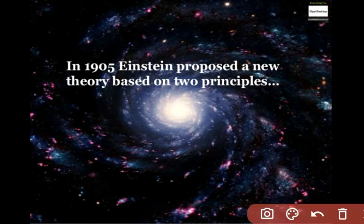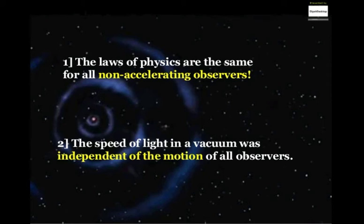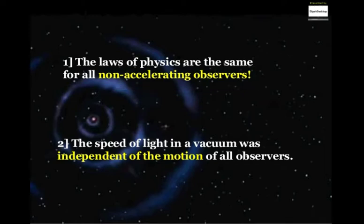In 1905, Einstein proposed a new theory based on two principles. First, the laws of physics are the same for all non-accelerating observers. Second, the speed of light in a vacuum is independent of the motion of all observers. These are the two basic principles known as the postulates of special theory of relativity.